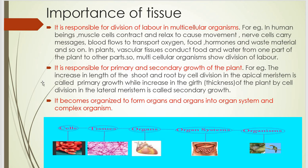So these are the importances of tissue. First, tissue is responsible for division of labour in multicellular organisms. Second, it is responsible for primary and secondary growth of the plant. And third, it becomes organized to form organs, organs into organ systems, and complex organisms.